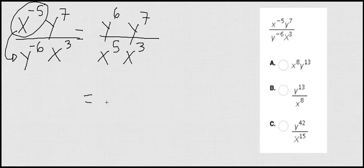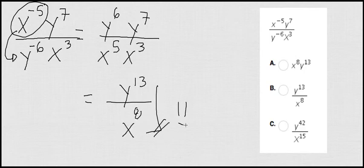And look at this. Now I have y to the 6, y to the 7. I just add the exponents and that's going to be 13. And x to the 5, x to the 3, which is going to be 8. And, ta-da! That is my answer.